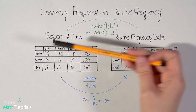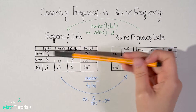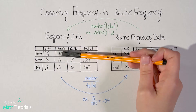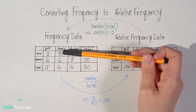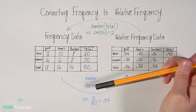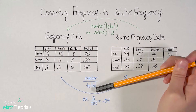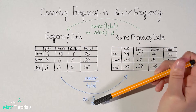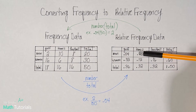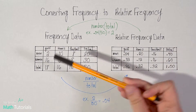You would do that for each data point. So men who like tennis would be 10 divided by the total, 50. 10 divided by 50 is 0.2.